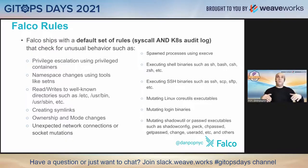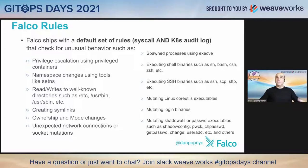Falco already ships with a default set of over 120 syscall-level rules — rules like creating symlinks, somebody executing into a shell, or being in a directory they shouldn't be in. It also has Kubernetes audit log capability, so if somebody tries to create a namespace they shouldn't, or anything like that, you'll get alerted.